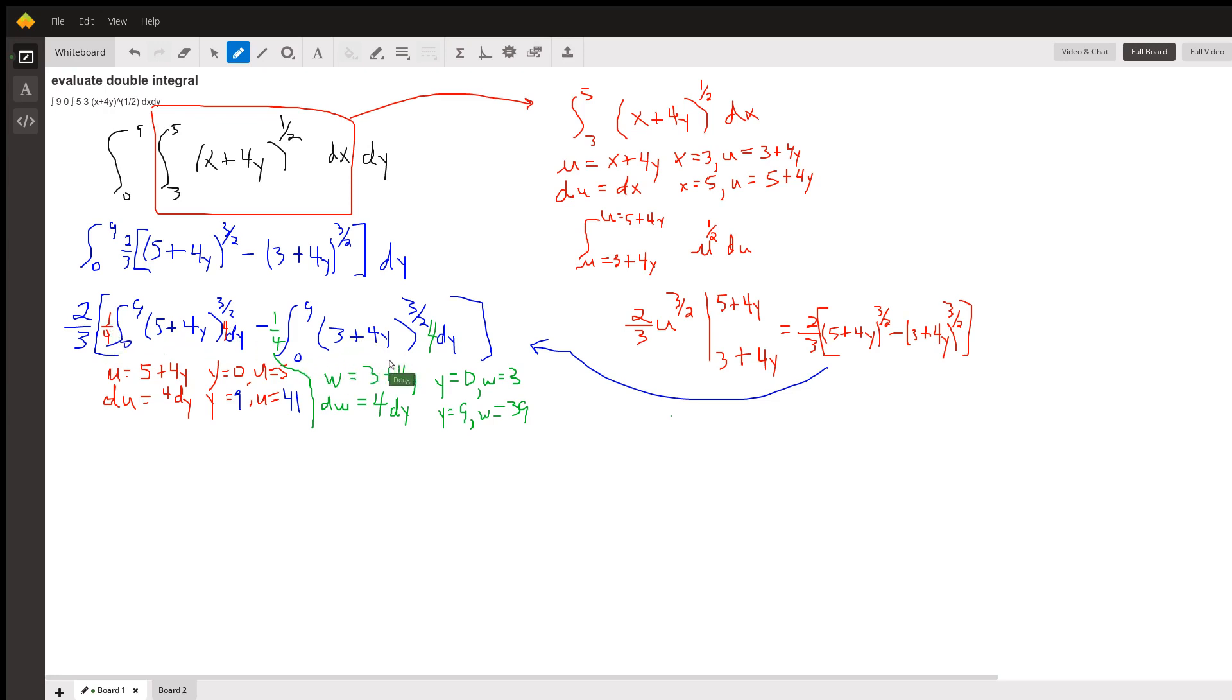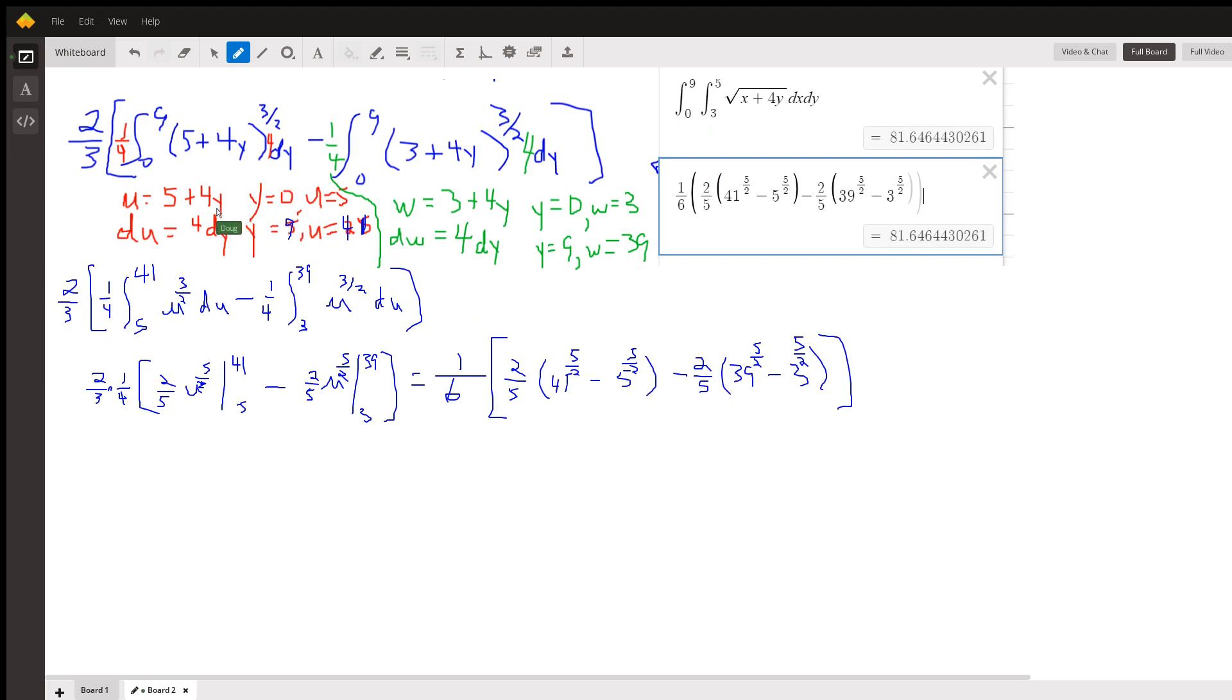Similarly, for the second integral, I let w equal 3 plus 4y. Dw is 4 dy. So again, I had to put a 4 and a negative one-fourth. Change the limits of integration. And here's what happened.